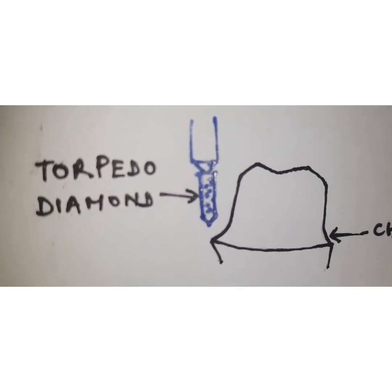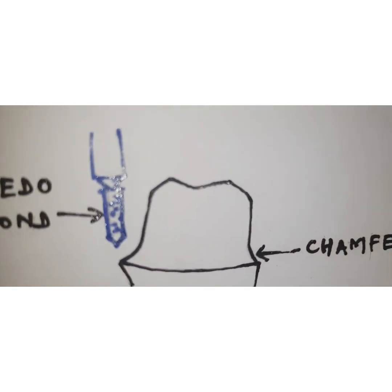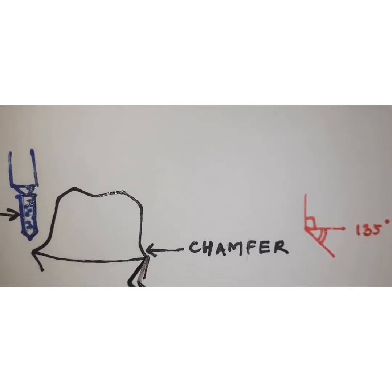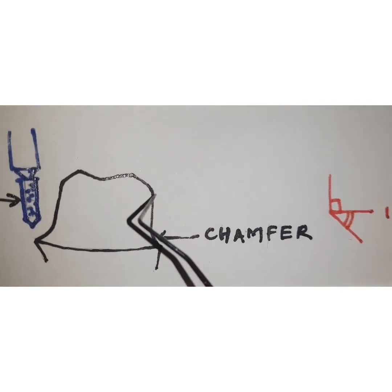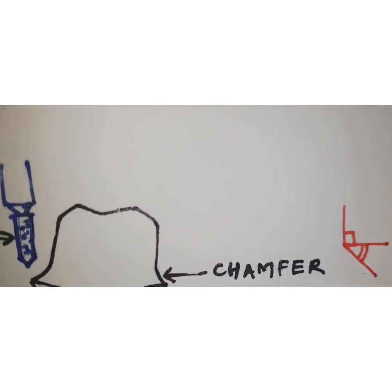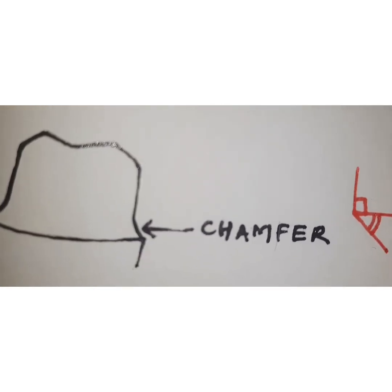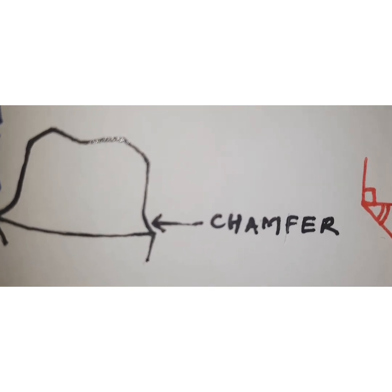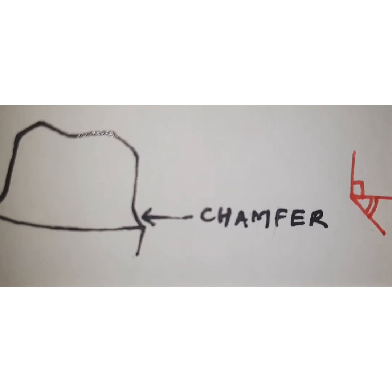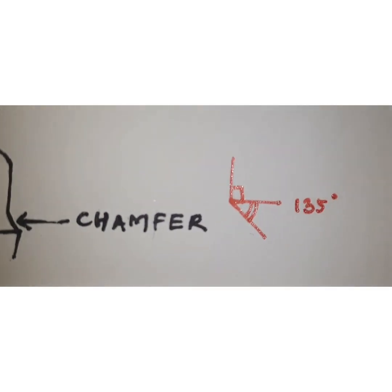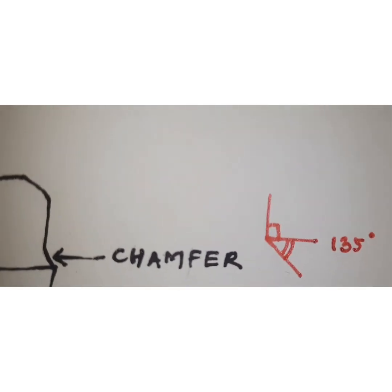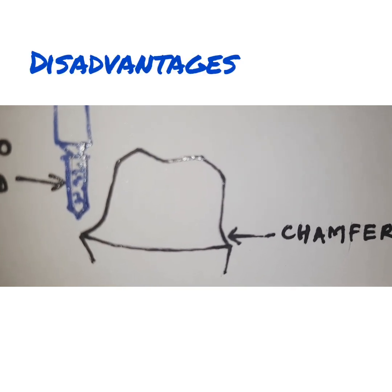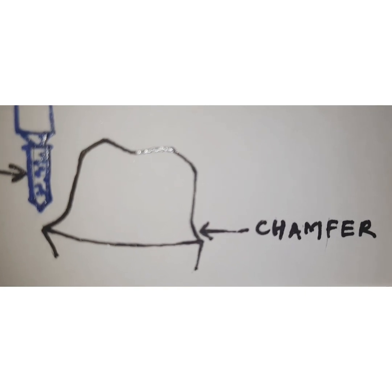The advantage of the chamfer finish line is it involves less tooth structure, making it a more conservative preparation. It provides adequate seal at the margin due to the sloping, giving a good sliding fit with minimal space between the crown and tooth structure. It has a distinct margin readily visible on the tooth, impression, and die. It also provides adequate bulk of restorative material due to the obtuse angle. The disadvantage is there may be chances of unsupported enamel rods.